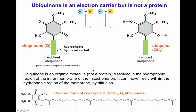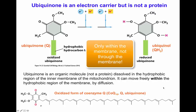Ubiquinone is an organic molecule dissolved in the hydrophobic region of the inner membrane of the mitochondrion. It is free to move within the hydrophobic region by diffusion. It is not able to cross the hydrophilic region and therefore always stays within the hydrophobic region of the membrane — it can diffuse through the membrane but not across it.